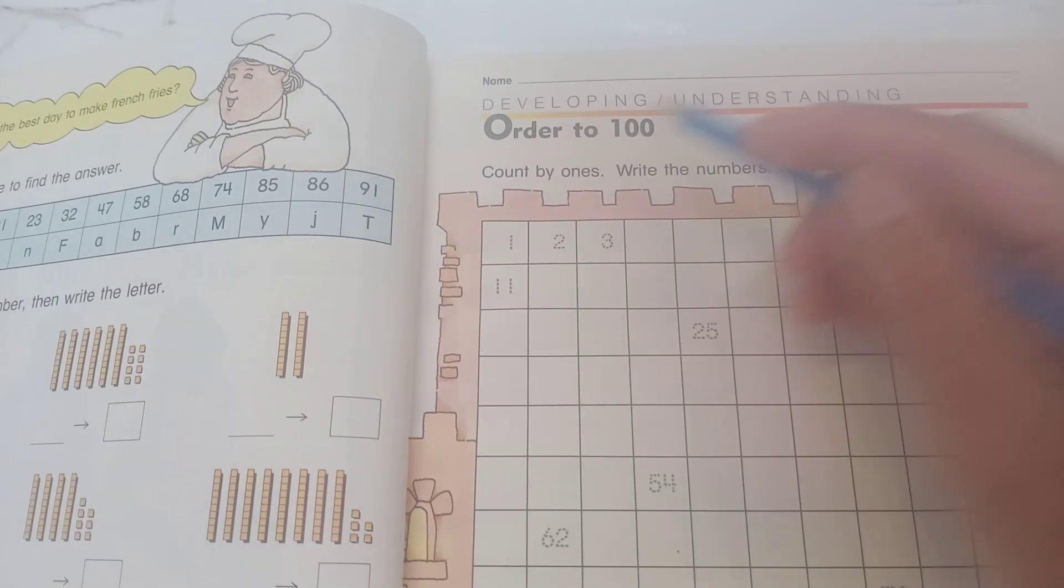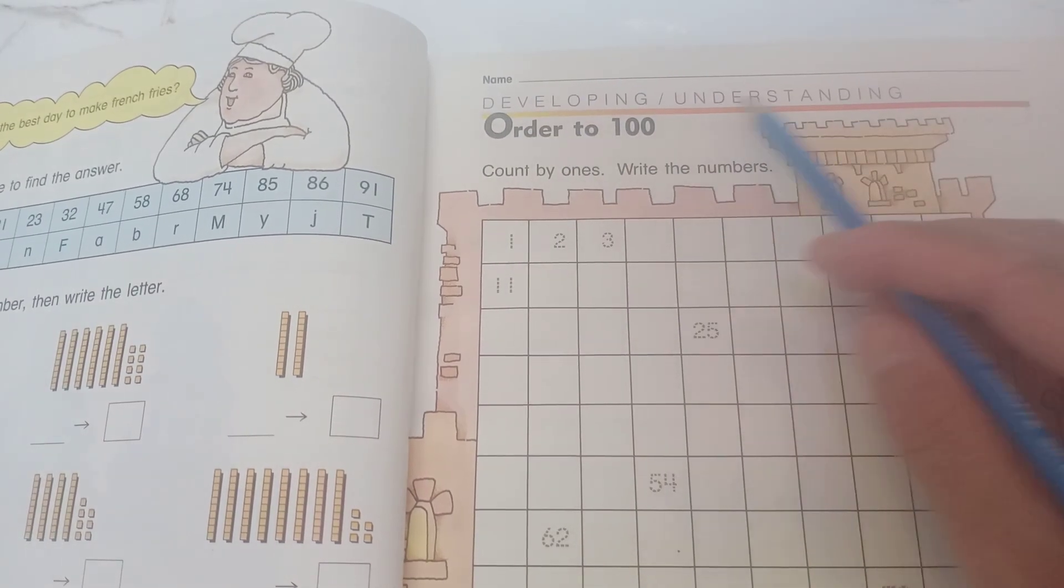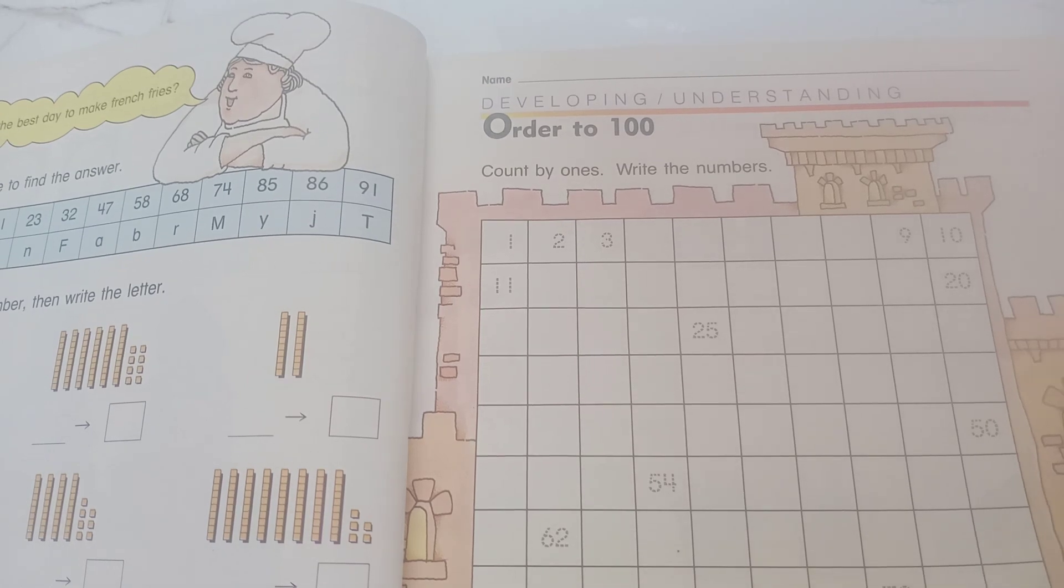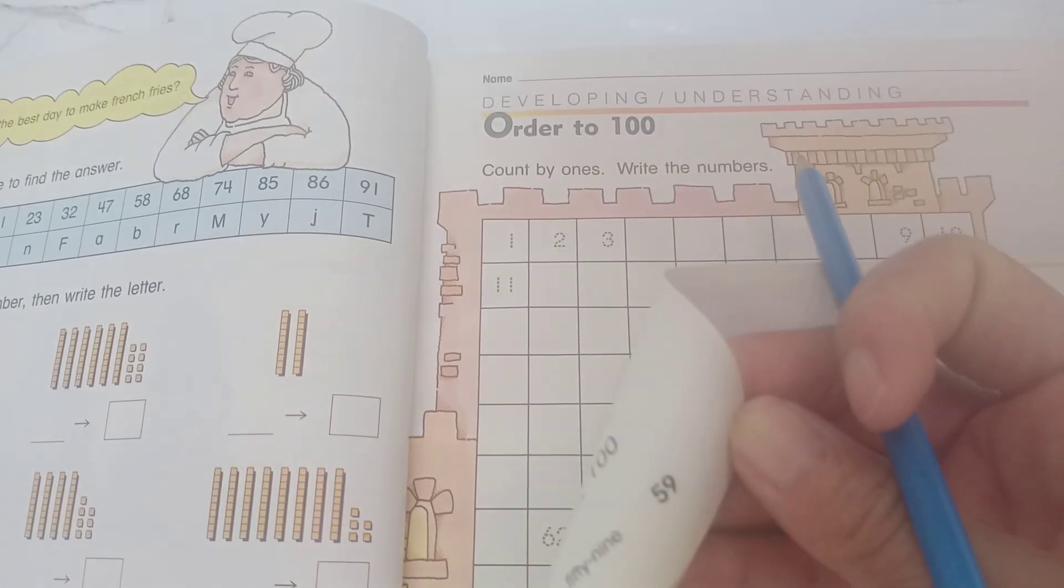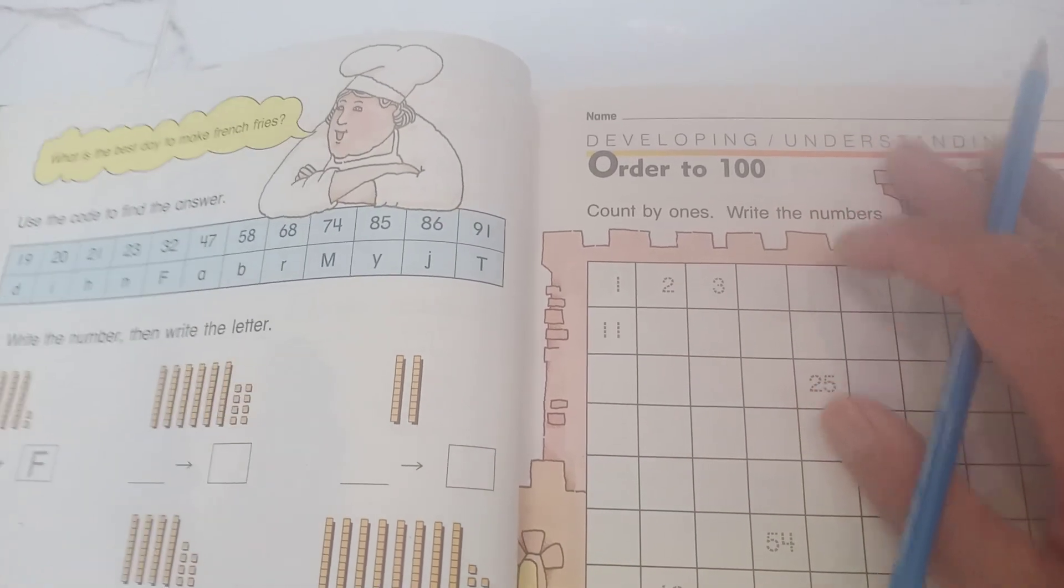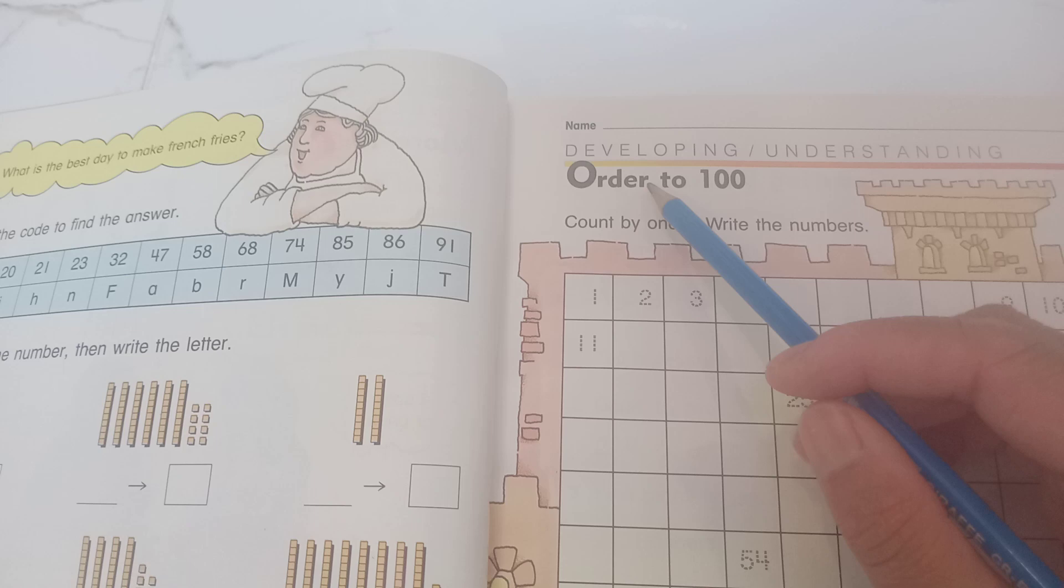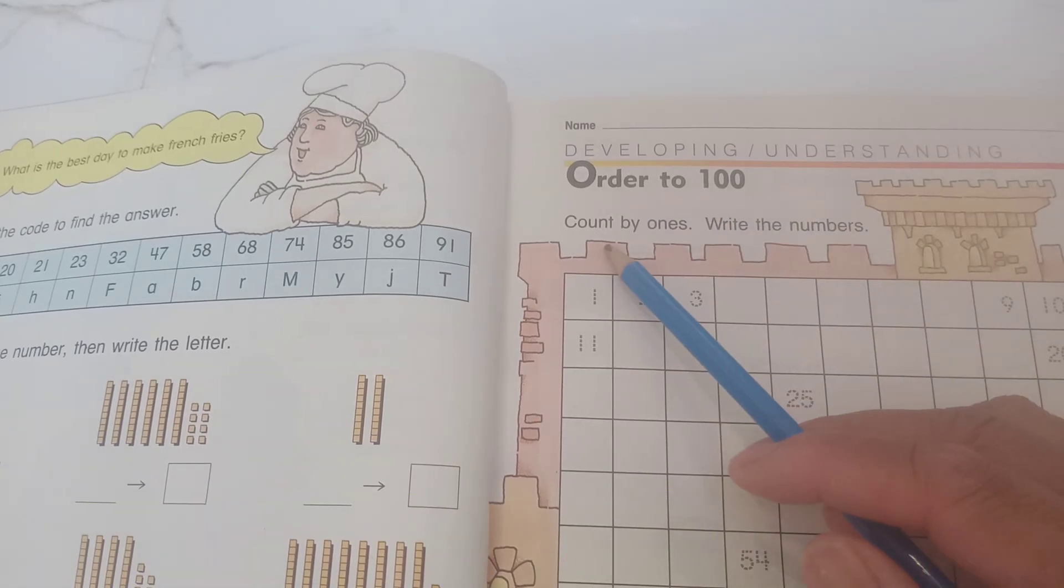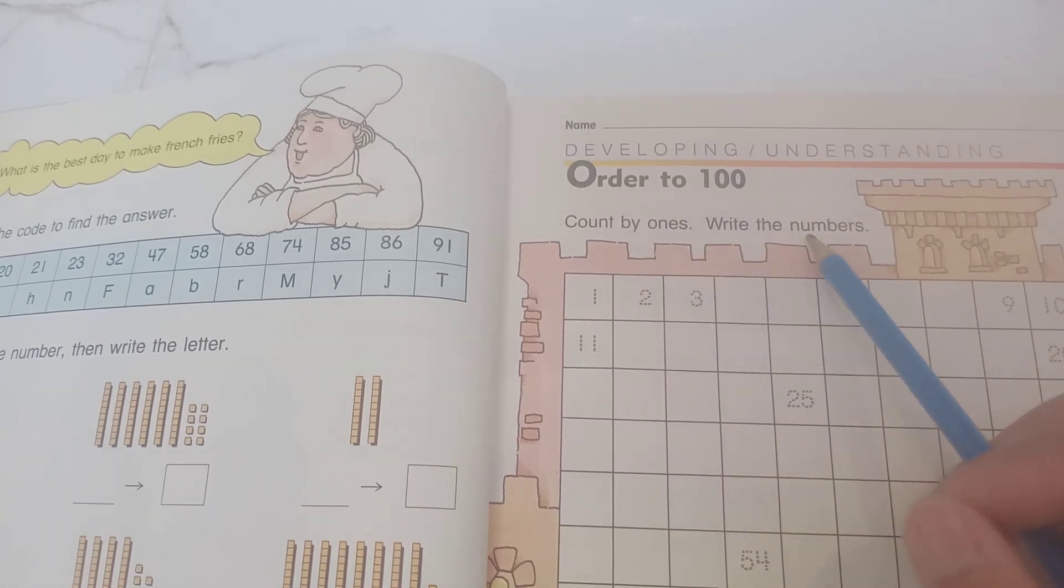Hello and happy to see you again. We're developing understanding with the book Mathematics on page 59. This book is good experience for studying basic mathematics, order to 100, and count by ones and write the numbers.